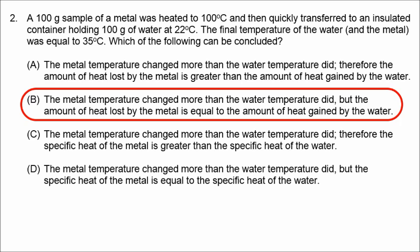What's constant here — obeying the first law of thermodynamics, or the law of conservation of energy — is that the heat lost by the metal equals the heat gained by the water. Choice D cannot be true because they have different specific heat values. In general, the larger the delta T, the smaller the specific heat capacity. We can eliminate choices C and D.